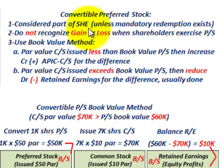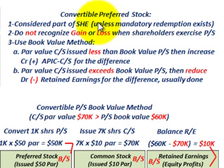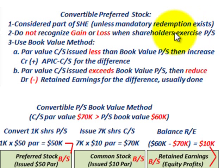Let's look at our general rules for convertible preferred stock. Point one: you consider it part of shareholders' equity unless a mandatory redemption exists on the preferred stock — meaning it's not part of any debt; it's considered an equity instrument, not a debt instrument. Point two: you do not recognize any gain or loss when the shareholders exercise the preferred stock, that is when they exchange the preferred stock for common stock.